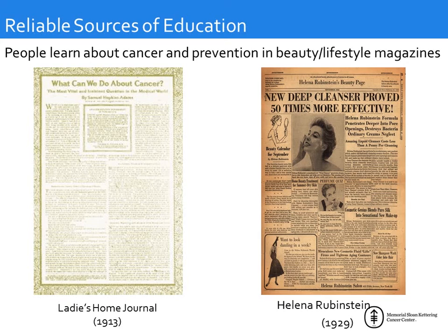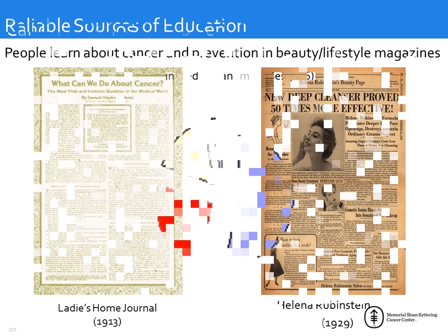Another important interaction: some of the first media by which people were educated about cancer were beauty magazines. This was released in the Ladies Home Journal in 1913, as people were so scared about cancer that the government launched a campaign. Articles appeared in beauty and lifestyle magazines, and Helena Rubinstein also published articles about sun damage and how to prevent it.